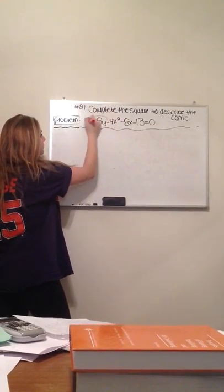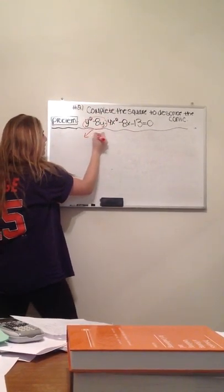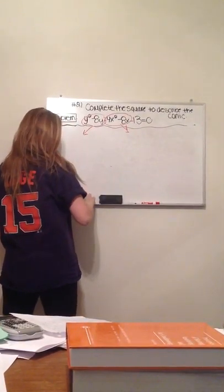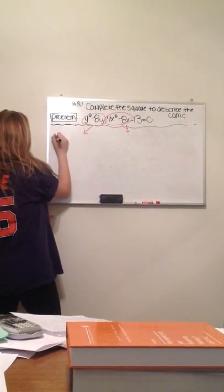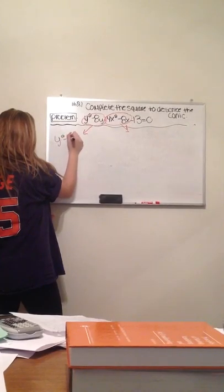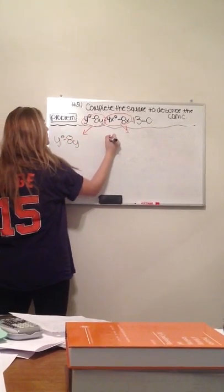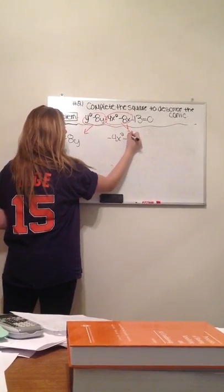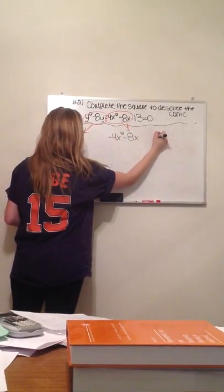It's going to be easier if we group our y's together and if we group our x's together. So that would equal y squared minus 8y minus 4x squared minus 8x equals 13.